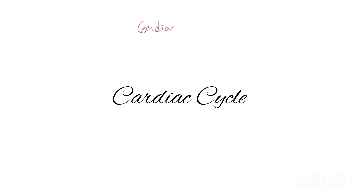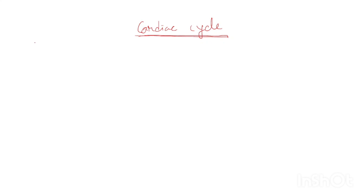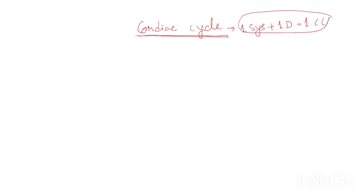Cardiac cycle. When we discuss the cardiac cycle, mainly we are discussing the seven phases. First of all, let us see what is cardiac cycle: one systole plus one diastole equals one cardiac cycle. So from one heartbeat to the next heartbeat, it is a cardiac cycle.